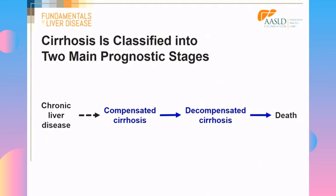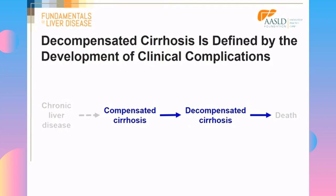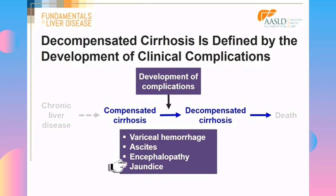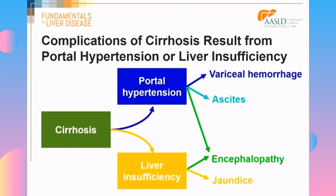For many years, we thought that cirrhosis was a single entity. Now we know that cirrhosis has to be classified in at least two main prognostic stages: compensated and decompensated. Decompensated cirrhosis is defined by the development of clinical complications — specifically variceal hemorrhage, ascites, encephalopathy, and jaundice. These are clinically overt complications, not ascites seen only by ultrasound, not minimal encephalopathy. These complications are the result of two main syndromes: portal hypertension and liver insufficiency.